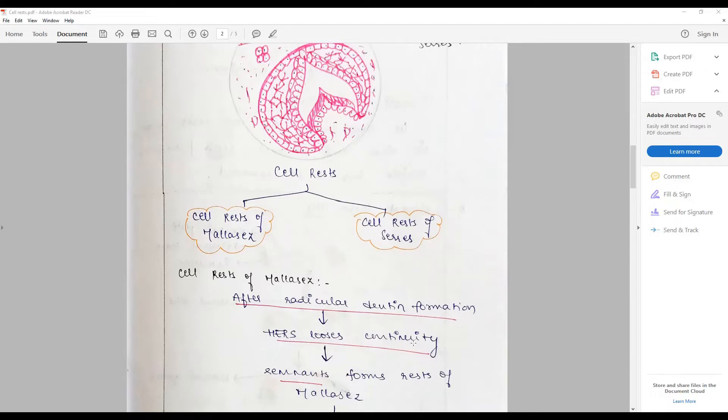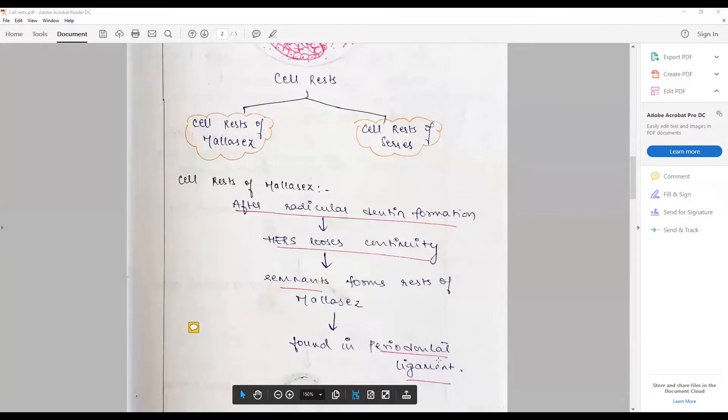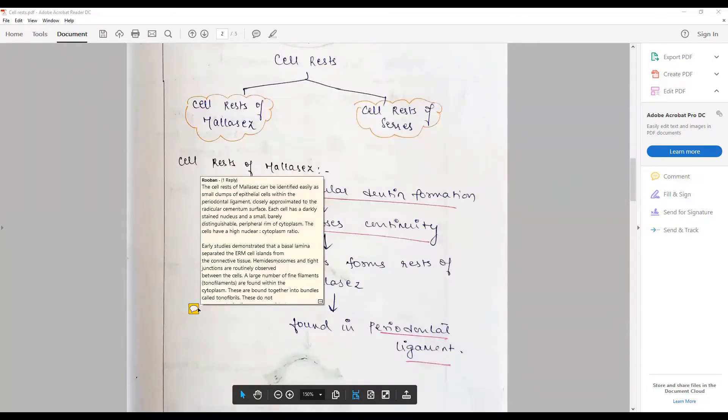They are found in the periodontal ligament. The cell rest of Malassez can be identified easily as small clumps of epithelial cells within the periodontal ligament, closely towards the radicular cementum.